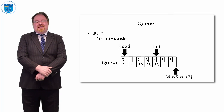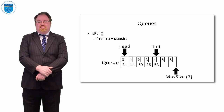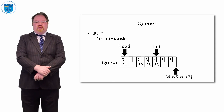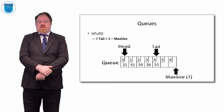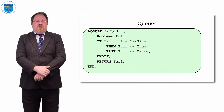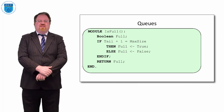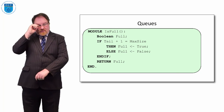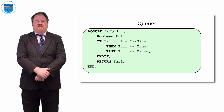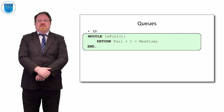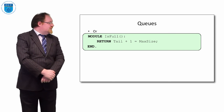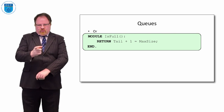Checking if the queue is full follows the same principle as checking if a stack is full. If tail plus one equals max size, then it's full. For example, if tail is pointing at six, then six plus one equals seven, which equals max size — so we can't add anything. In code: if tail + 1 == max size, then full is true, else full is false, and we return 'full'. More concisely, we can just return (tail + 1 == max size) directly.